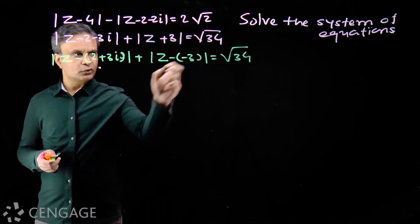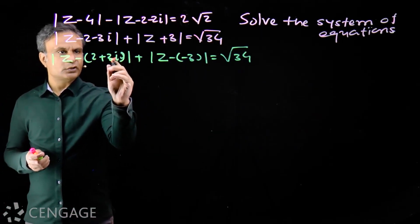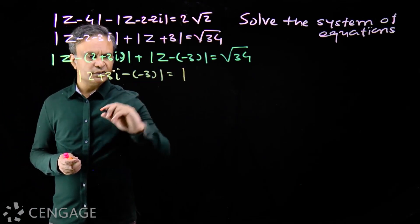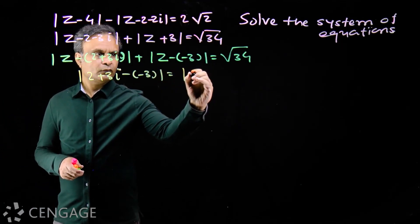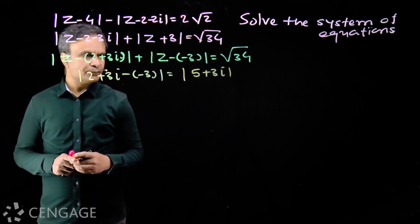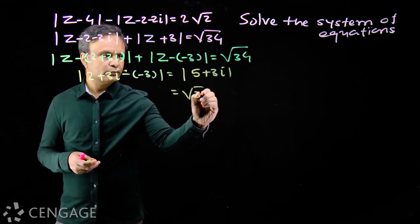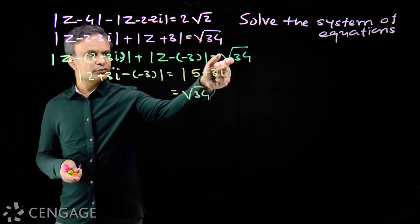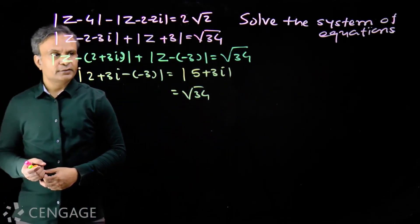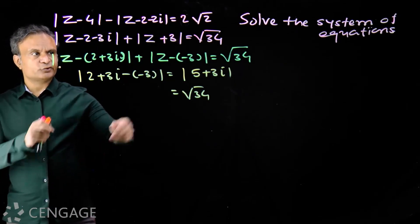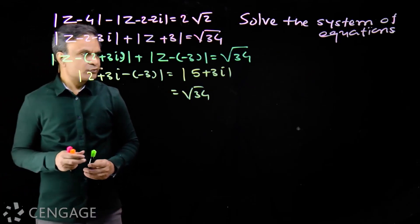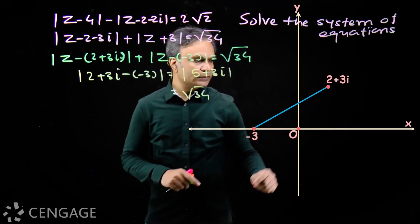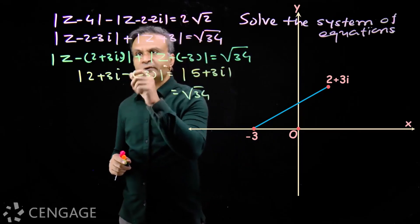We check this value with respect to these two complex numbers. The distance between 2 plus 3i and minus 3 is the modulus of 5 plus 3i, which equals root 34. So we have the equation modulus of (z minus z₁) plus modulus of (z minus z₂) equals modulus of z₁ minus z₂. Therefore the locus of z will be the line segment joining these two points, 2 plus 3i and minus 3. Z will lie on this line segment.